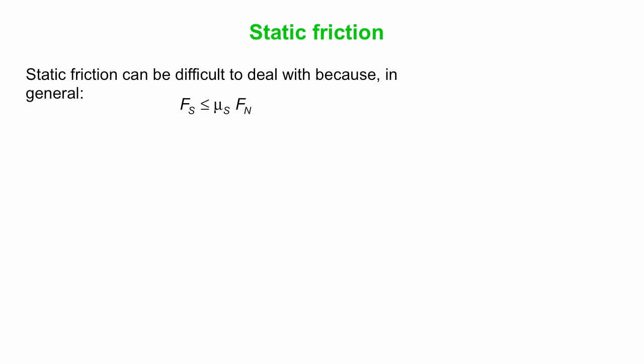Static friction can be difficult to deal with because we have this less than or equal to sign. FS in general is less than or equal to mu S times FN. It's only FS max which is equal to mu S times FN.